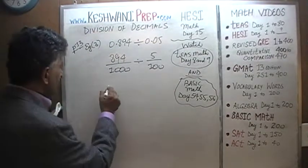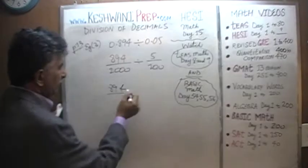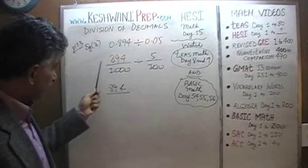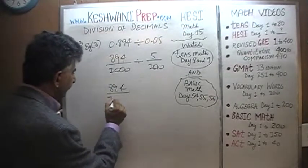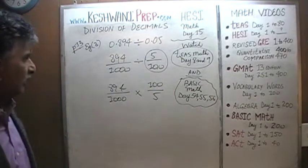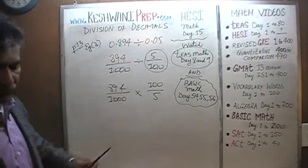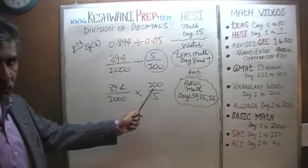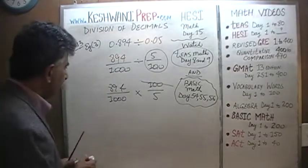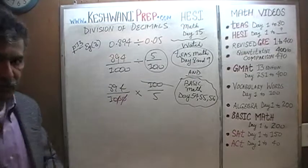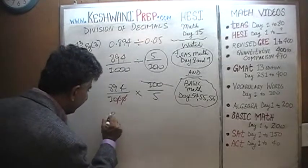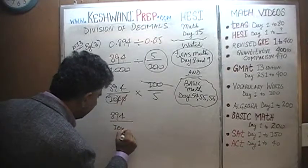Let's not be lazy — we take 894 over 1,000 times the reciprocal of 5 over 100, which is 100 over 5. We see 100 on top and 1,000 on the bottom. Dividing top and bottom by 100, the 100 disappears and 1,000 loses two zeros, leaving 10. So at this point we have 894 over 10 times 5.